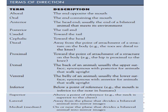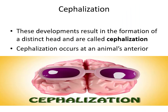The oral side is the side on which the mouth is located; the aboral side is the opposite. Cephalization is the development of the head — it is the region in which most of the sensory organs are present.